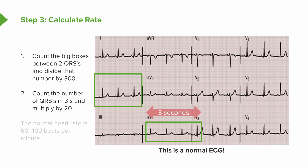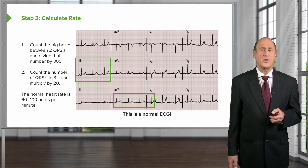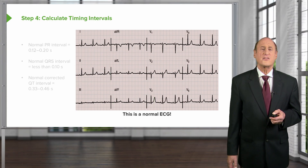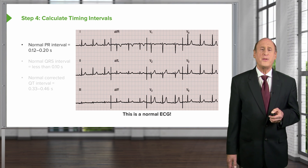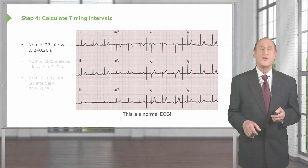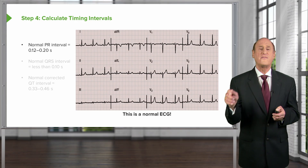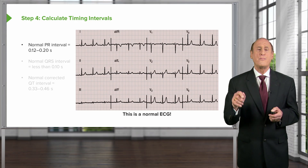The normal heartbeat is 60 to 100 beats per minute. Now we have the heart rate — and by the way, the computer is almost always right on the heart rate. Let's talk about the intervals. A normal PR interval is 0.12 to 0.20 seconds — that's three little boxes to five little boxes, since there are five little boxes within the bigger box. So the normal PR interval from the beginning of the P wave to the beginning of the QRS is between three and five little boxes, or 0.12 to 0.20 seconds.